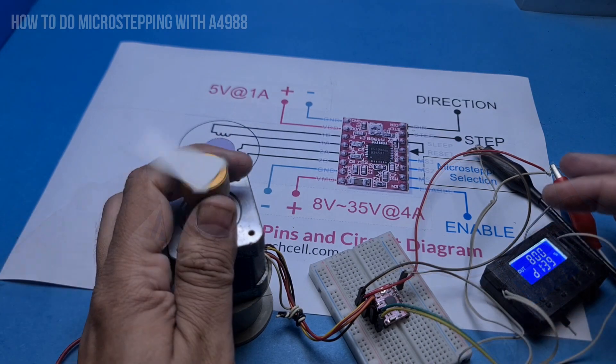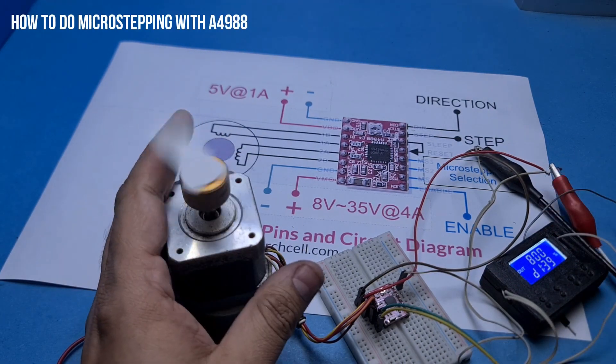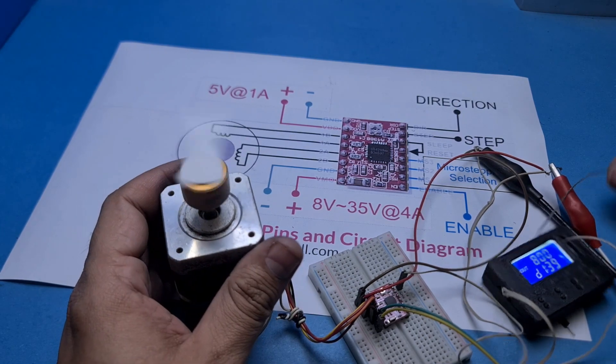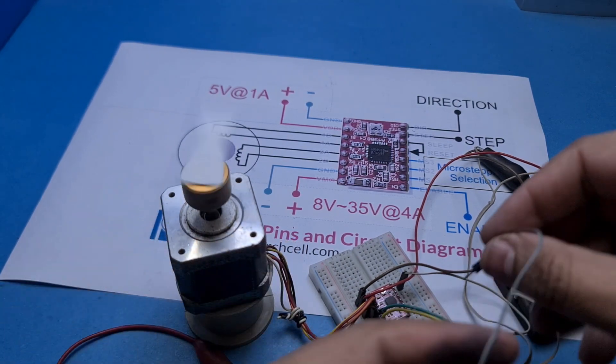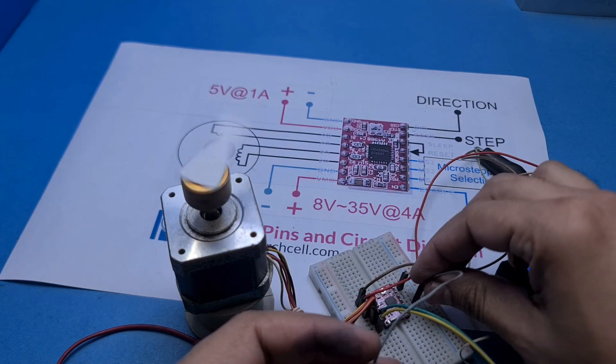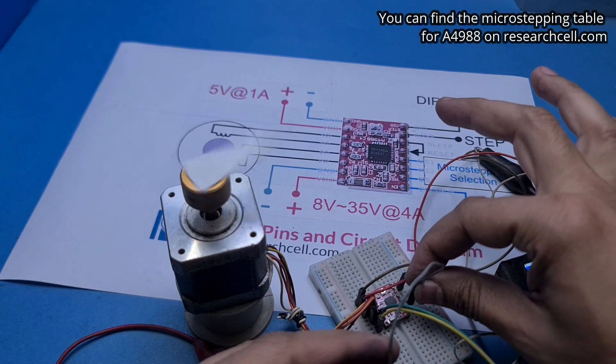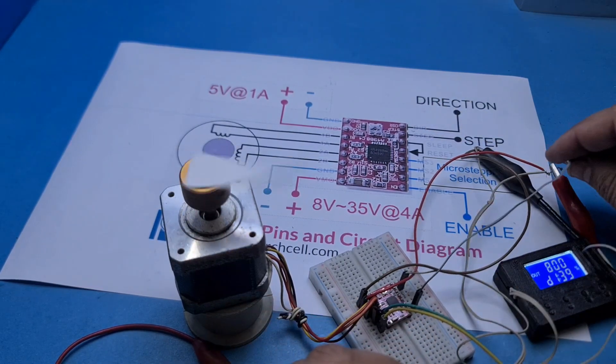Now it is time to show you how to use the microstepping of the A4988. It is very easy to do. You just need to connect microstepping pins in required order with the plus 5 volt. For instance, if I connect this MS1 with plus 5 volt, the motor speed will be reduced to half. That's because the driver has entered the half step mode.